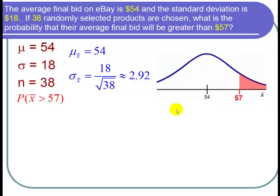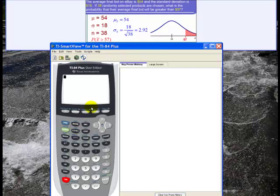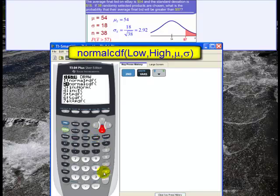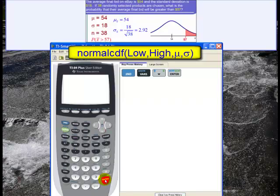So now let's use our calculator to find this probability. So here's the calculator, and since I want the area under a normal curve to the right of 57, I can use the normal CDF function. That's second, distribution, I scroll down to get to the normal CDF, and hit enter.